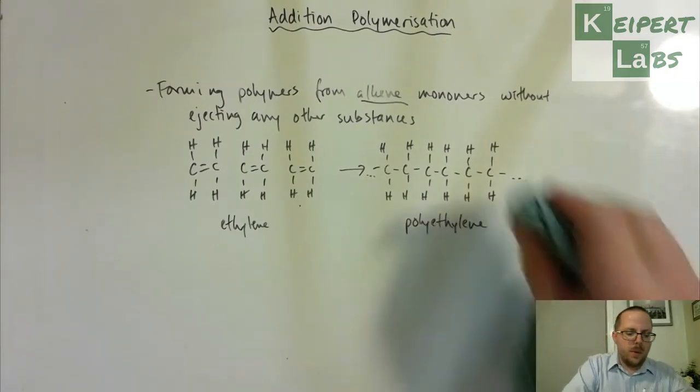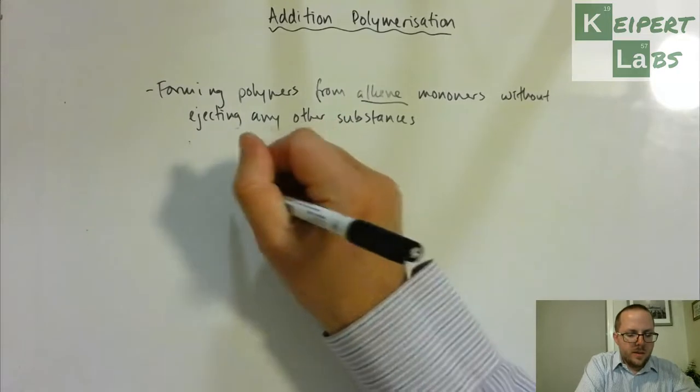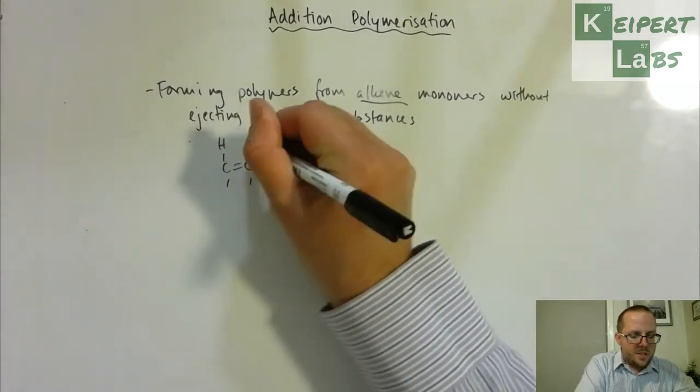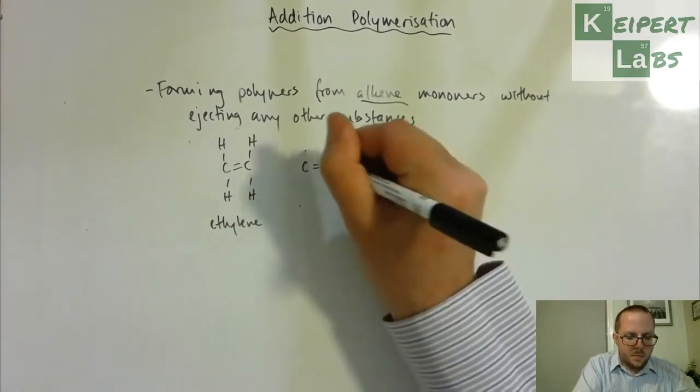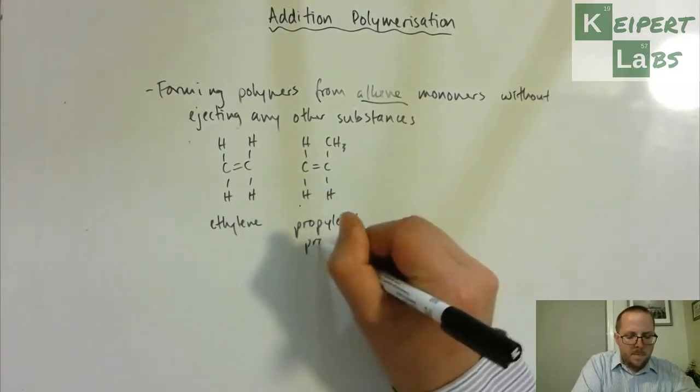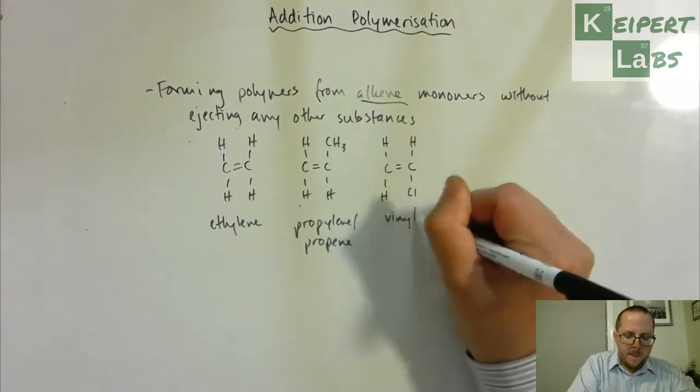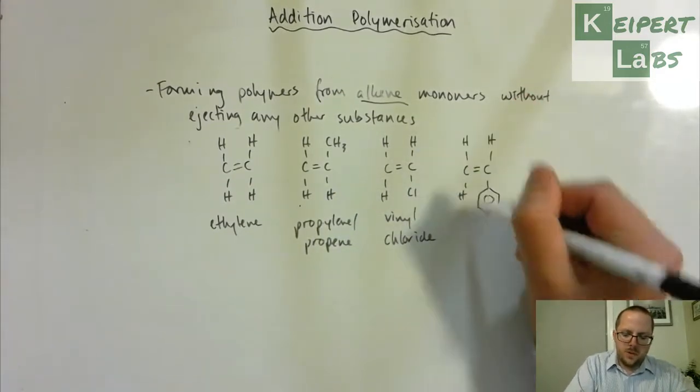So some of the other monomers that we talk about: we've got ethylene which is the simplest one that we can consider, we have this one which is propylene or propene, we have vinyl chloride, and we also have this one which is called styrene.